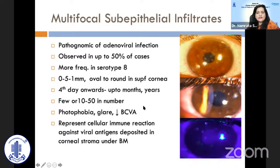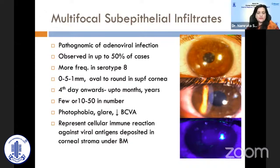Once the acute phase resolves, it can progress to a chronic phase with multifocal sub-epithelial infiltrates, seen in almost half of cases — more frequently with serotype 8. These are approximately 0.5 to 1 mm, oval to round, in the superficial cornea. They may appear from the fourth day onwards and persist for months or even years, typically numbering 10 to 15. Patients complain of photophobia, glare, and decreased best-corrected visual acuity. These represent a cellular immune reaction against viral antigens deposited on the corneal stroma under Bowman's membrane.